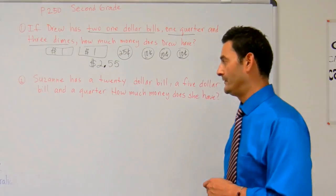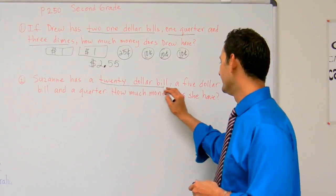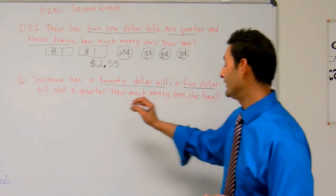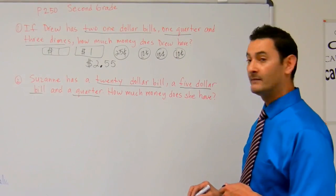Let's go ahead and take a look at number two. Here we have Susan has a twenty dollar bill, a five—I'm sorry, a five dollar bill, and a quarter. How much money does she have?